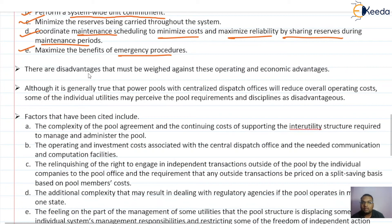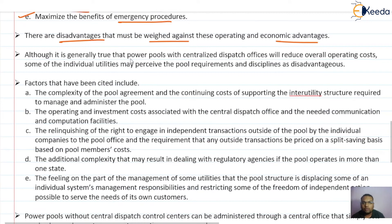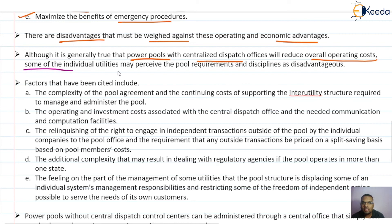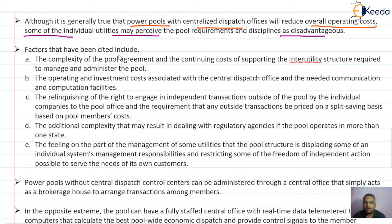There are also disadvantages that must be weighed against these operating and economic advantages. Although it is generally true that power pools with centrally dispatched offices reduce overall operating costs, some individual utilities may perceive pool requirements and disciplines as disadvantages. These include the complexity of the pool agreement and the continuing cost of supporting the inter-utility structure required to manage and administer the pool.